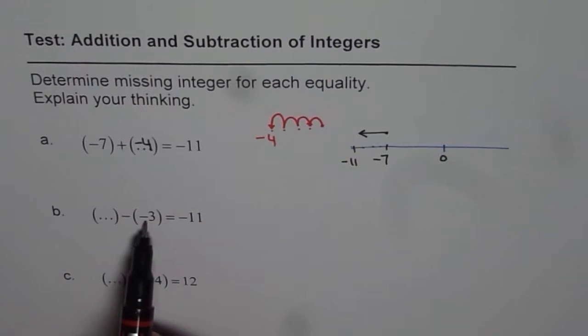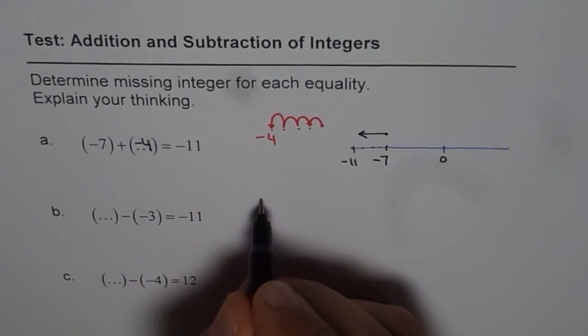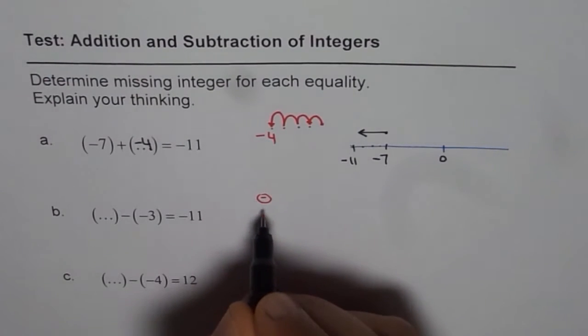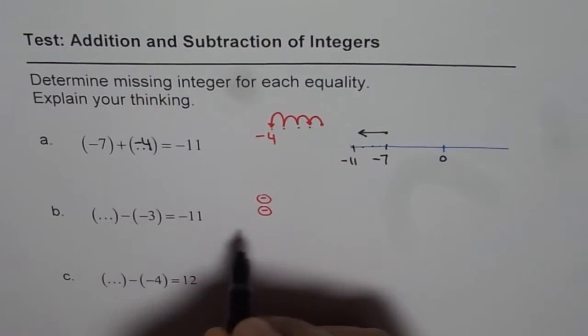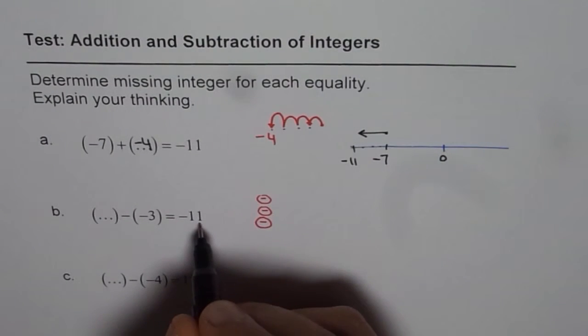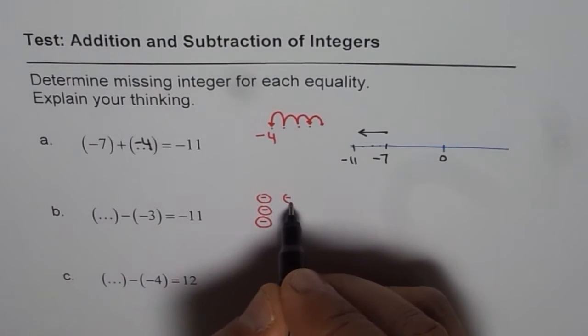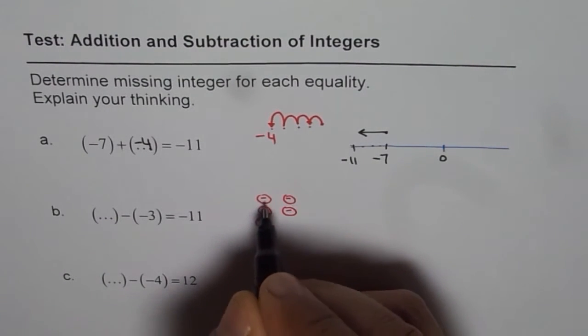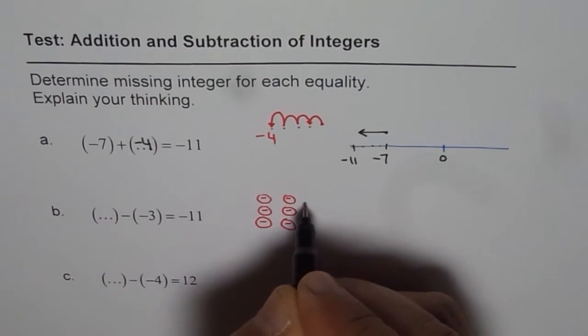So it should have at least minus 3 counters, right? So we will have at least minus 3 counters, which you have to take away. And then, once you take away these, you should be left with minus 11. That means, there are also minus 11 in addition to these 3.